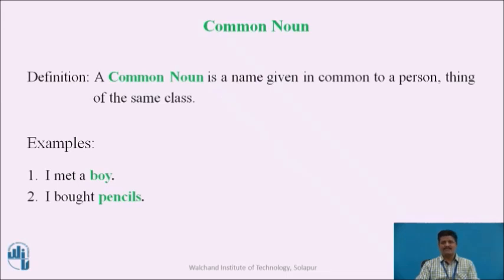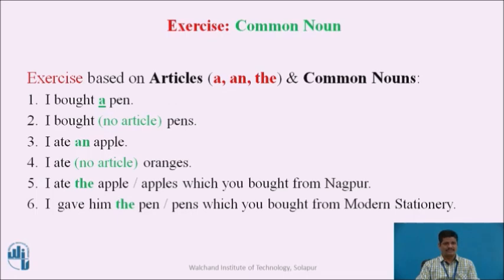Now let us do a small exercise on common nouns, based on articles 'a' and 'the.' In sentence 1, 'I bought a pen' — 'pen' is a common noun with indefinite, singular reference, so we use the article 'a.' In sentence 2, 'I bought pens' — no article is used before 'pens' because it is plural and the reference is indefinite. In sentence 3, 'I ate an apple' — 'apple' is a common noun with indefinite reference and starts with a vowel sound, so we use 'an.'